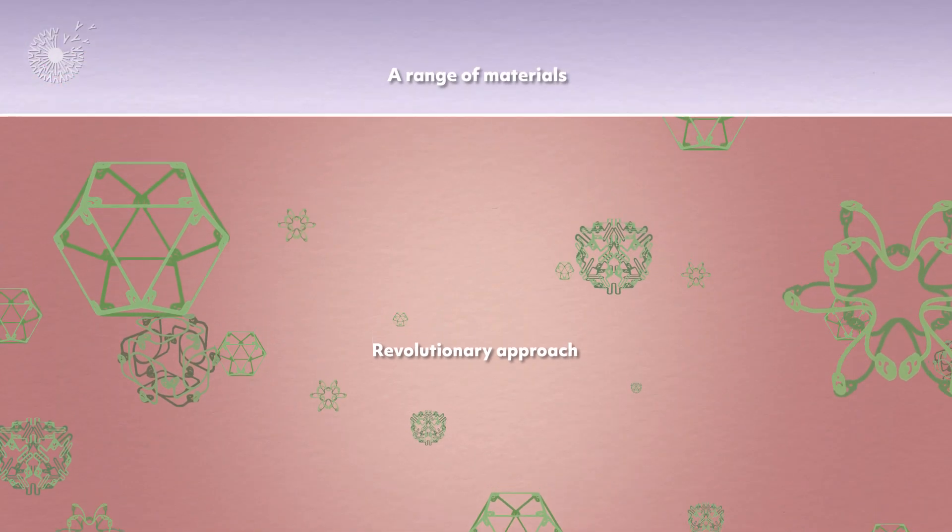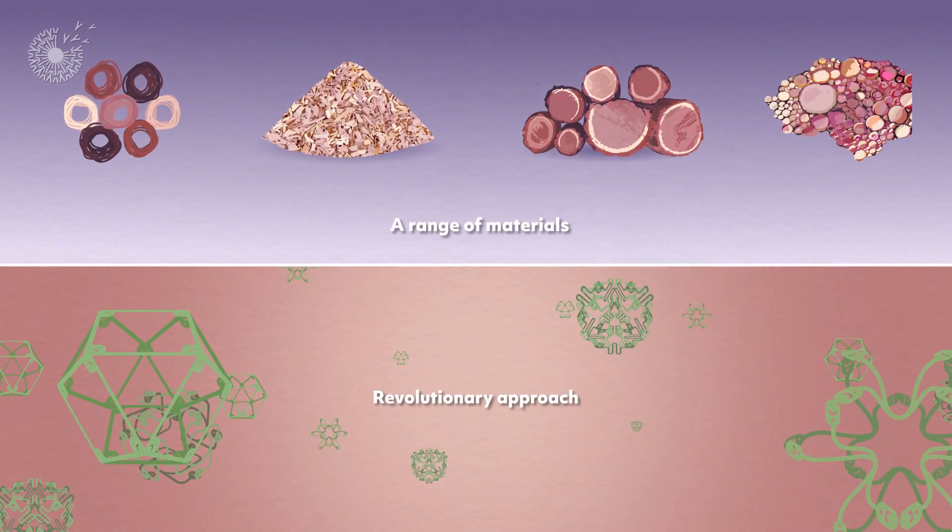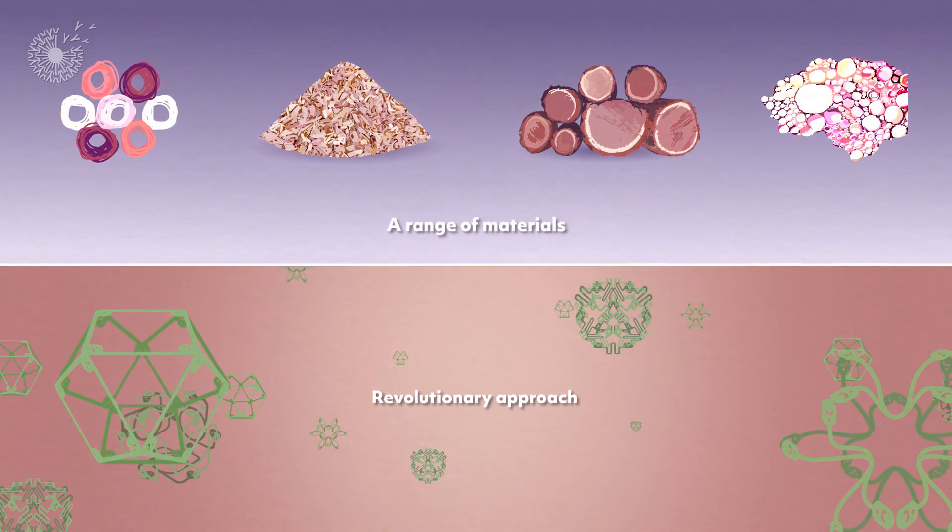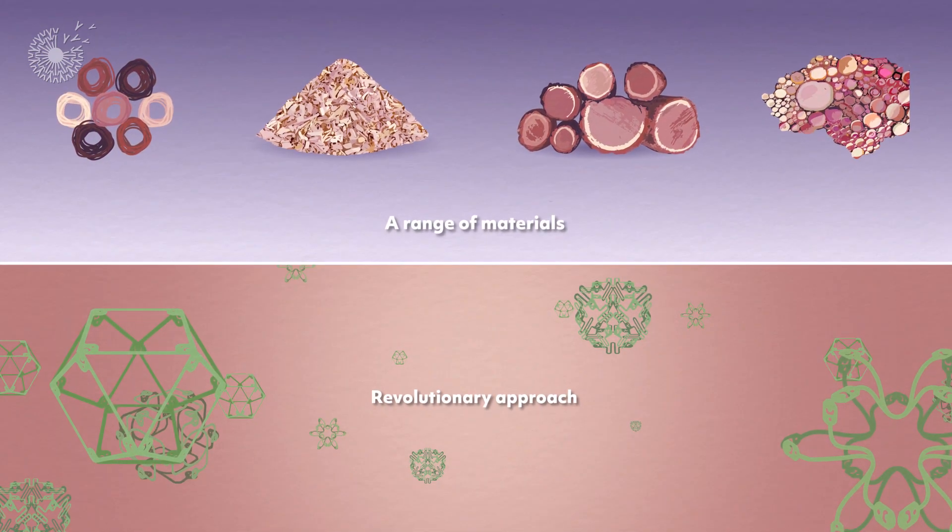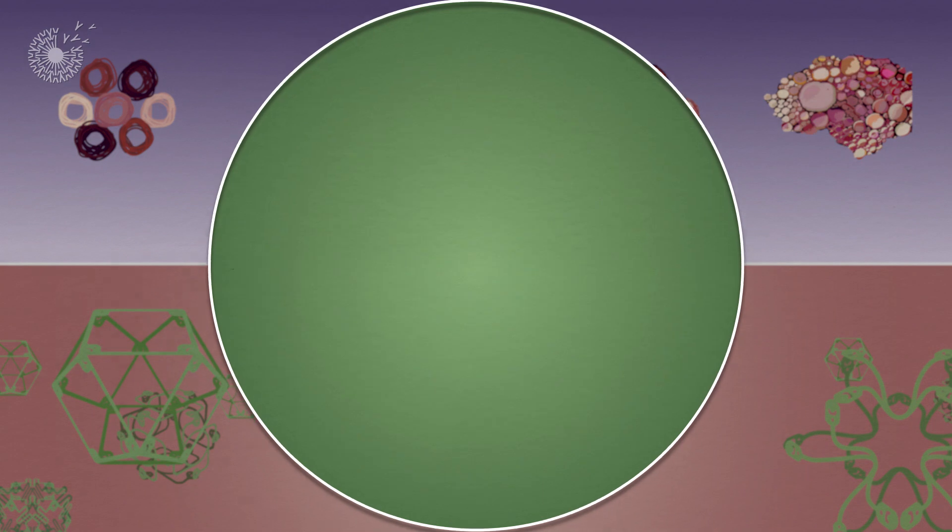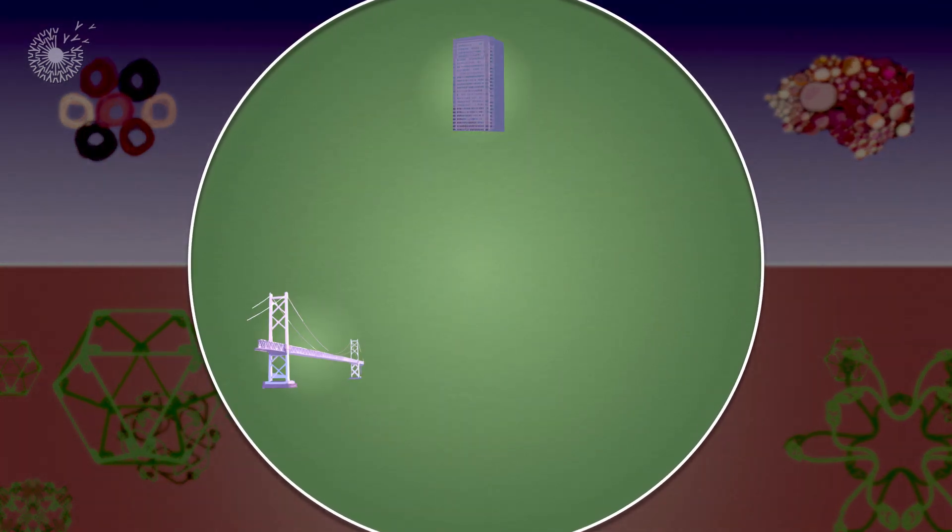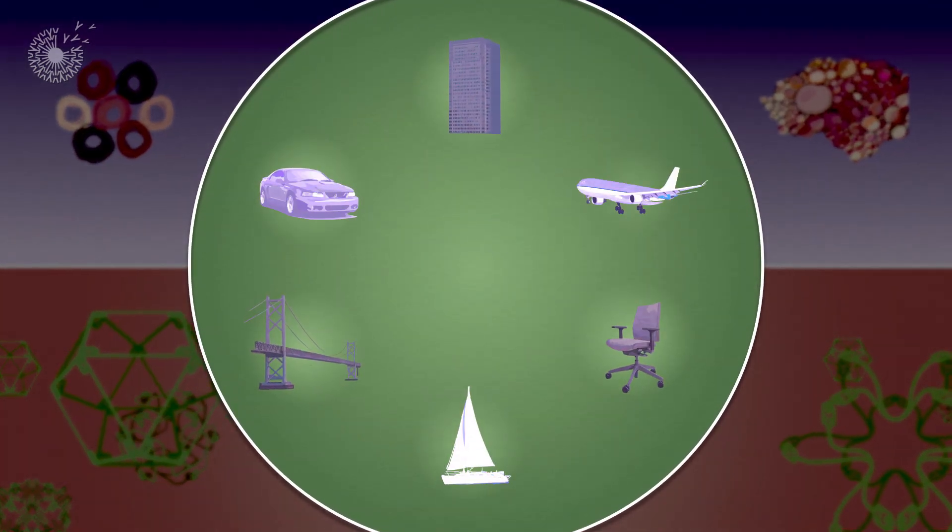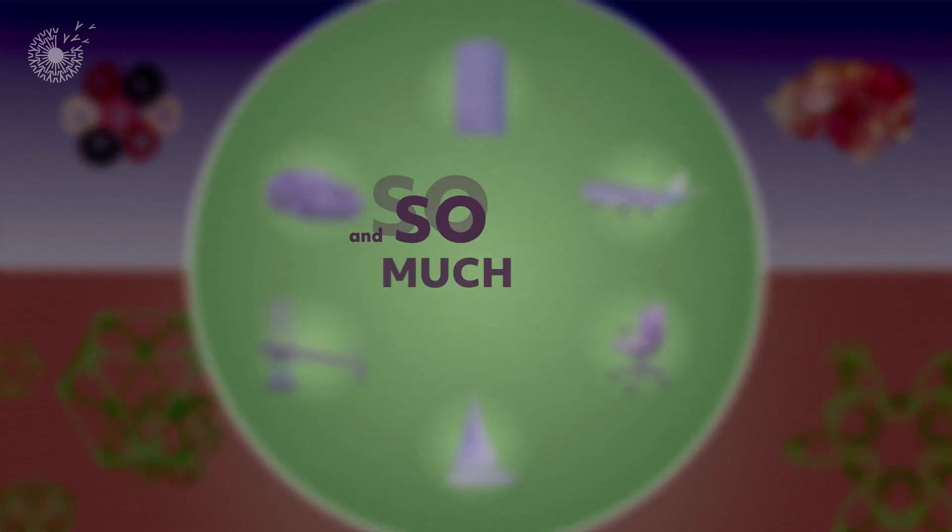And they can be produced from a range of materials, including wood and bio-composites, to make strong but ultra-lightweight construction materials for buildings, bridges, furniture, and vehicles, and so much more.